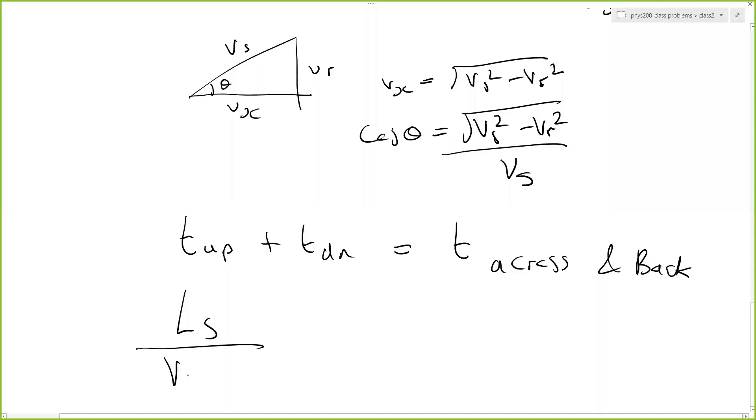So we have Ls divided by Vs minus Vr plus Ls divided by Vs plus Vr is equal to 2L divided by Vs into cosine theta, which is the square root of Vs squared minus Vr squared divided by Vs. So that will cancel.